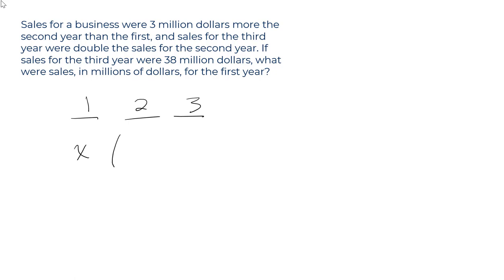For example, in year two, the business had three million more dollars than in the first year, so it had X plus three million dollars. And then in year three, the sales were double — two times as much in year three as they were in year two. So that's going to be two times the quantity X plus three.